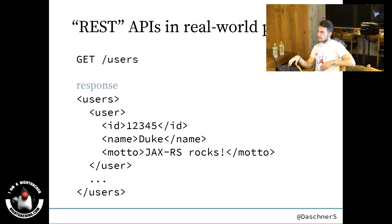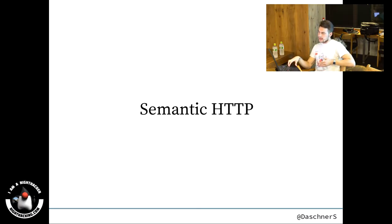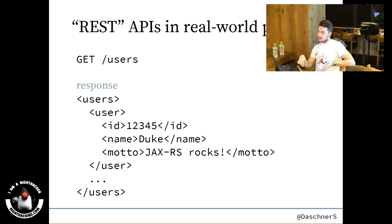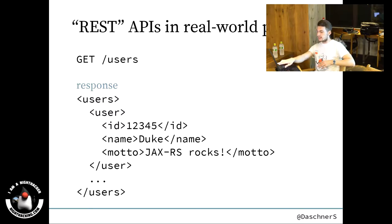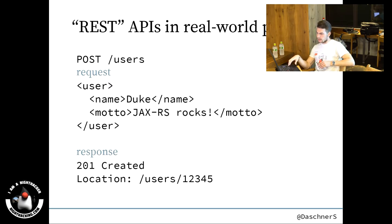And then you have a user with an ID and name and stuff like that. You see that in this case you used HTTP how it's meant to be used with the semantics — you use HTTP GET to actually read some information and not POST just to call a method. If you want to access one specific user, you would assume that the URL looks like users slash the ID 12345. We'll talk about the URLs more in a second.